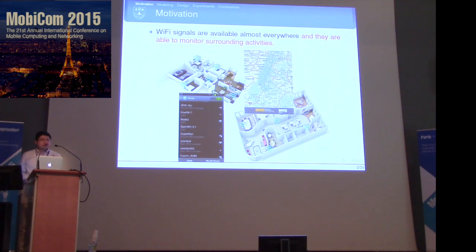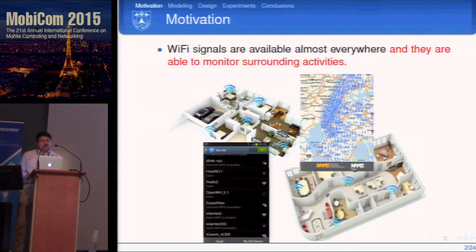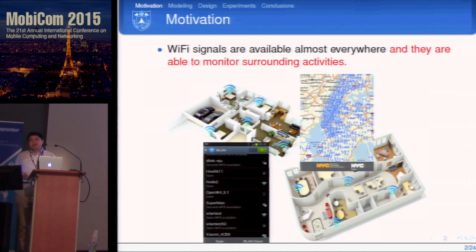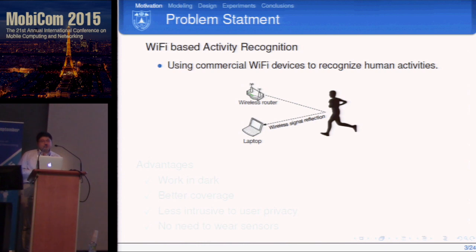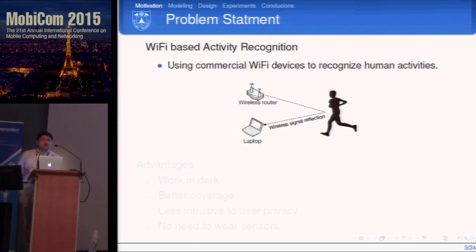Wi-Fi signal is almost everywhere, and human bodies can actually reflect these Wi-Fi signals, so human movement introduces changes in the Wi-Fi signals. Even very cheap Wi-Fi NICs can detect such changes. We aim to use commercial devices such as Wi-Fi routers or laptops to detect changes caused by human activities and recognize what is going on around these devices.